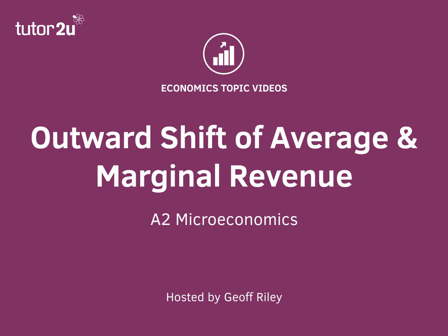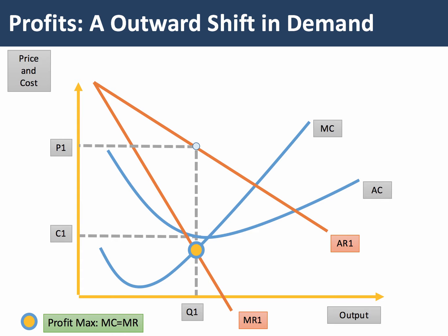Hi there. In this diagram short, we're going to take you through the analysis of what happens to a firm if there's an outward shift of their average and marginal revenue curves.